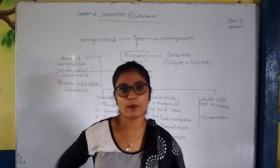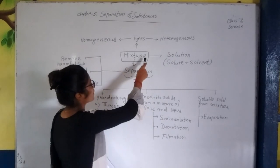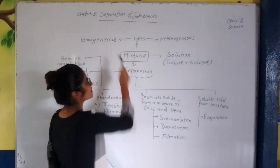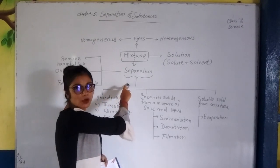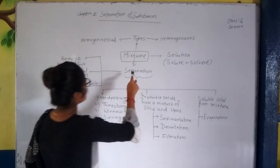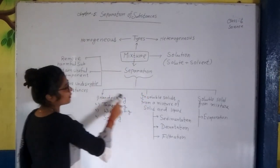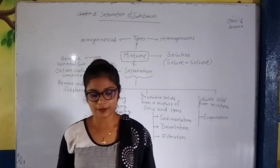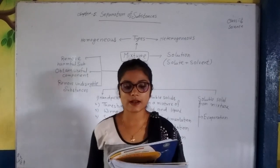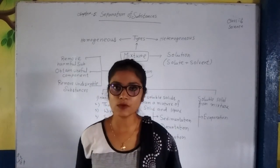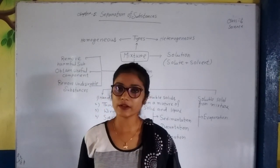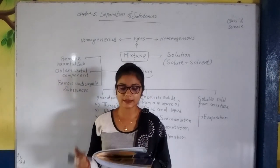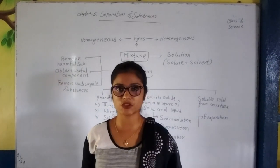In this topic, we have to cover up types of mixture, heterogeneous, homogeneous, the separation, and how to separate. Most of the things around us like air, sea and water, soil, rock, and grains — they are mixtures.